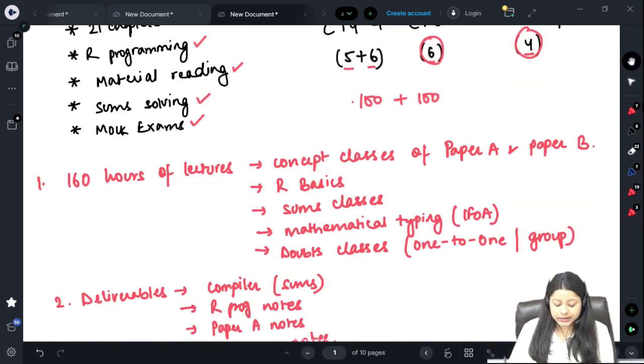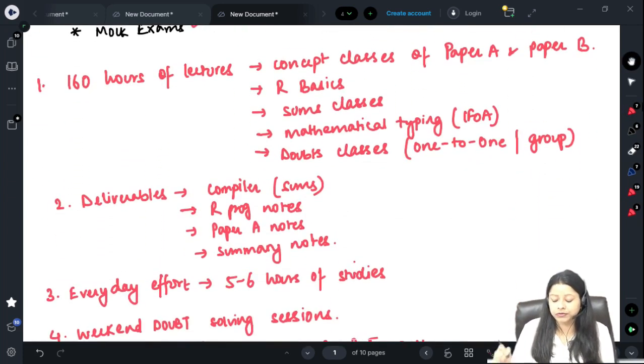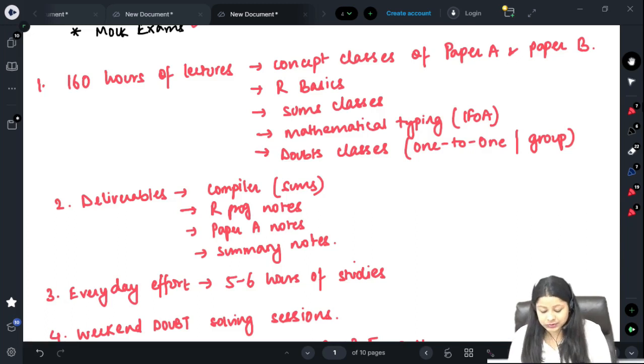Let's understand the number of lectures, lecture hours and time preparation required for this paper. First of all we will have 160 hours of lecture and this will cover all the concept classes for paper A, basically all the theory concepts.